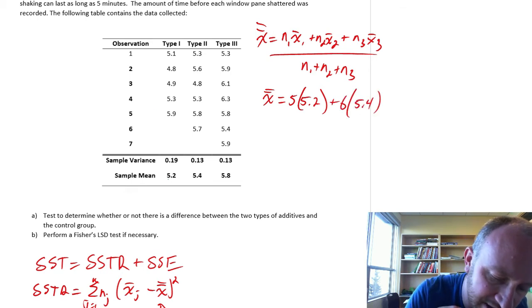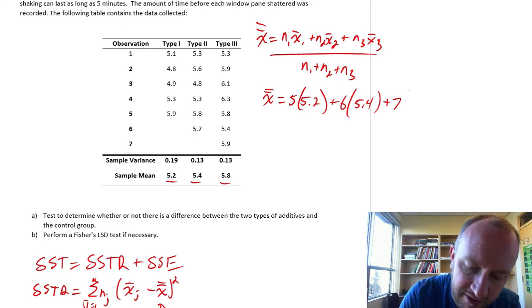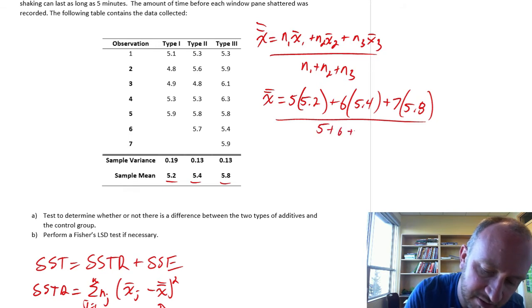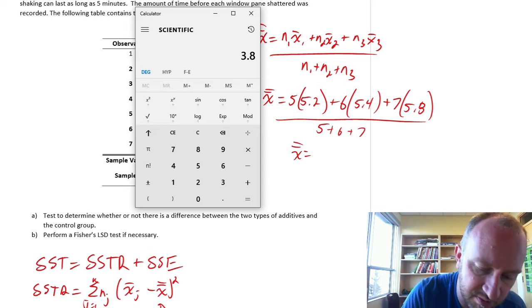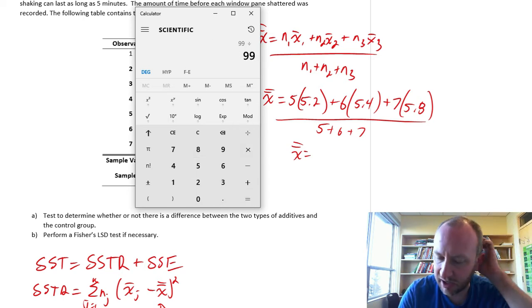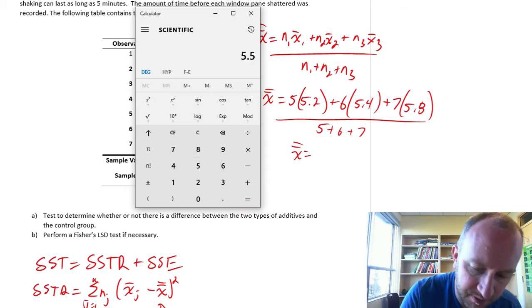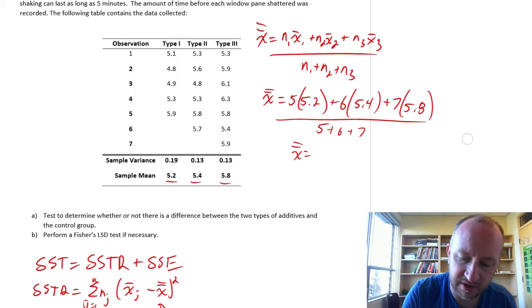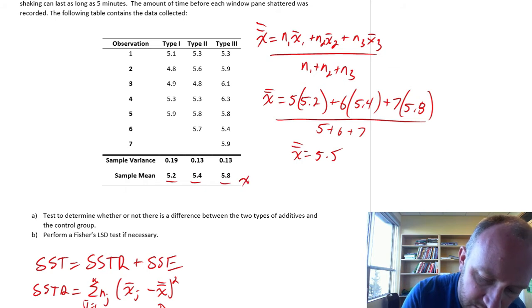Here I'm taking our sample sizes and I'm multiplying by our sample means. Divided by 5 plus 6 plus 7. So our grand mean here is going to be 5 times 5.2, 6 times 5.4, 7 times 5.8, divided by 18. So 5.5 is our grand mean.